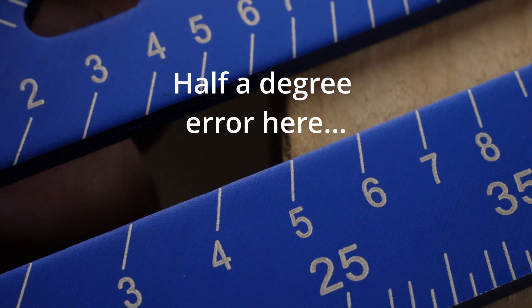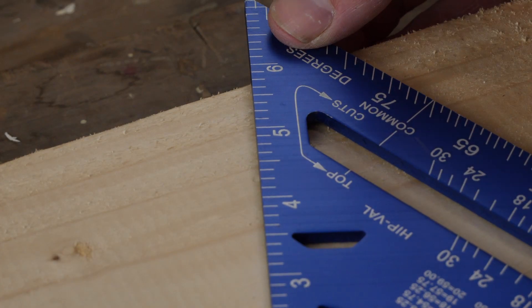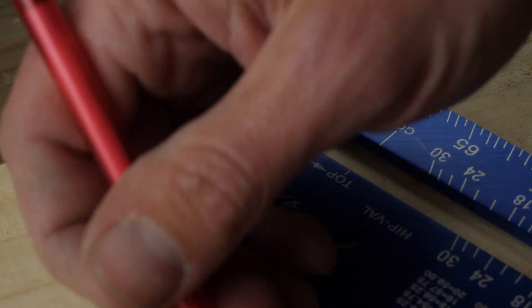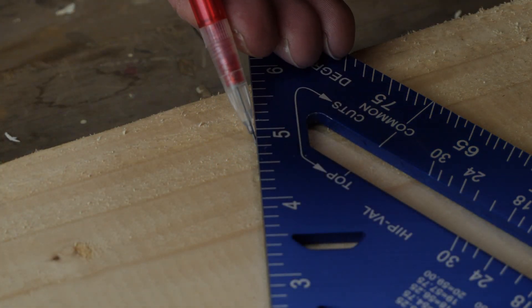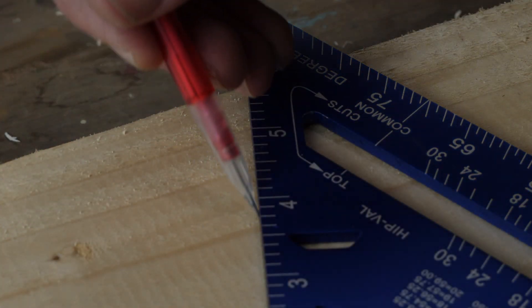If I get it wrong by half a degree here and I mark this line with a 0.8 mm pencil just for clarity, then move it half a degree, which is easy to do accidentally.